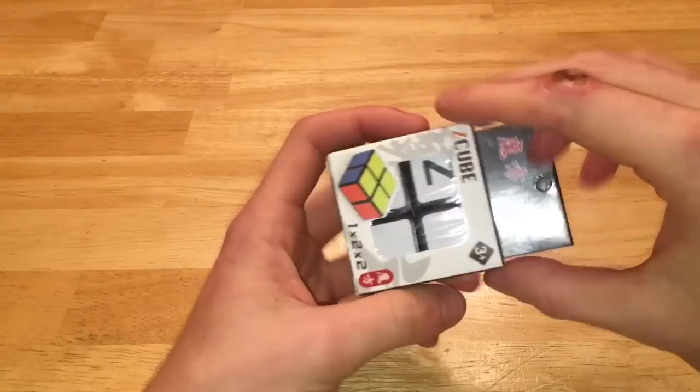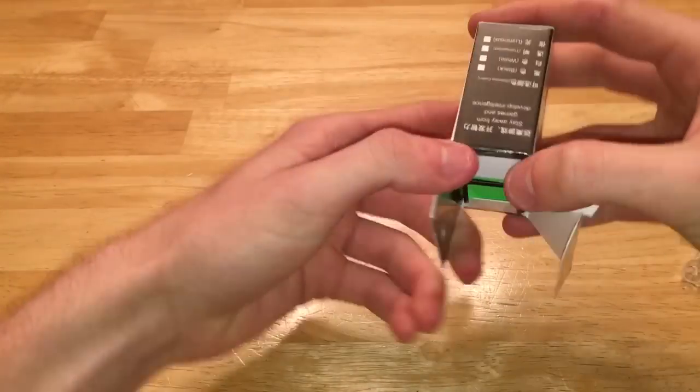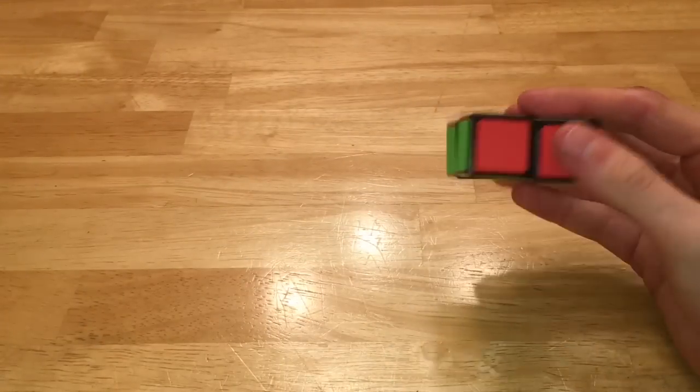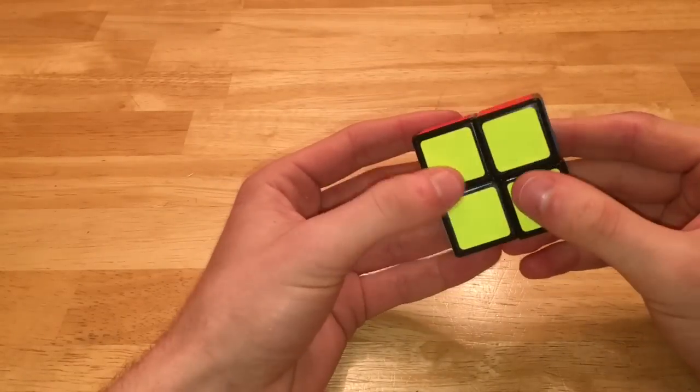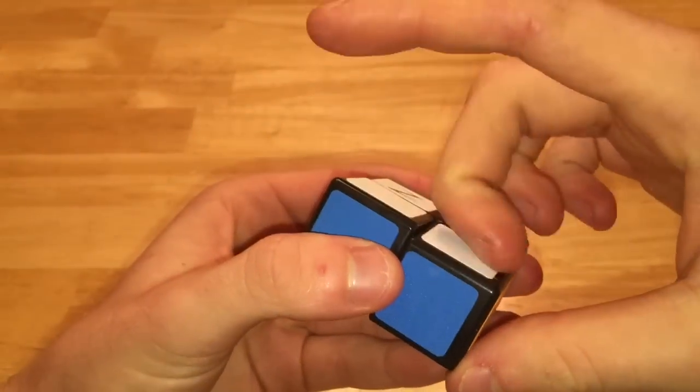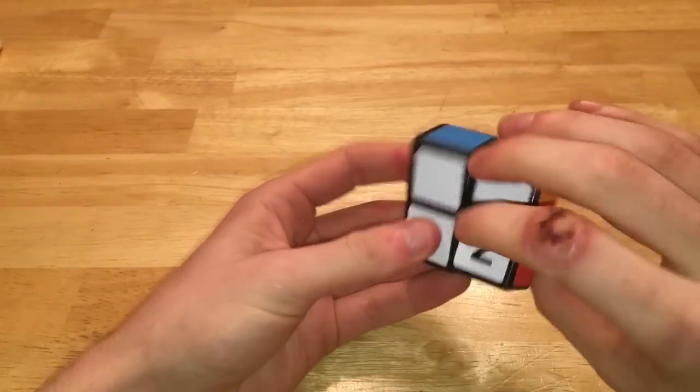Next puzzle we have here is the Z 1x2x2. Now I've always really wanted to have one of these just for collection purposes and they had one a while back and I couldn't get my hands on it. And oh, this is interesting. The stickers are like that kind of material, which is weird. But first turns...